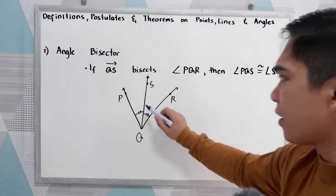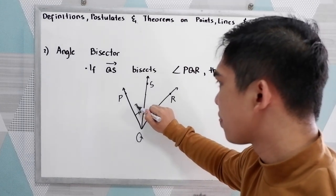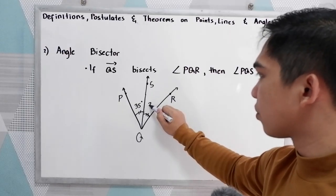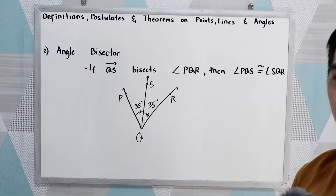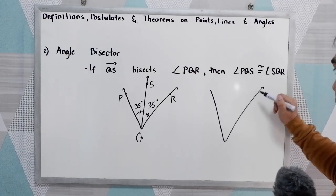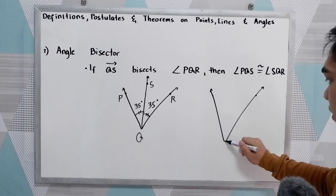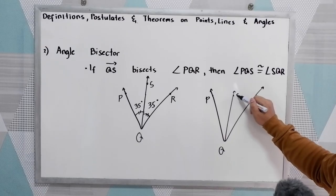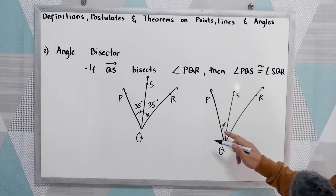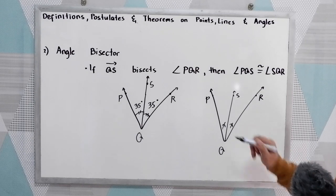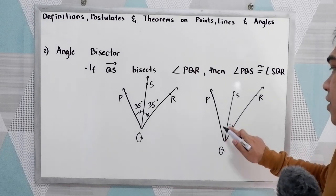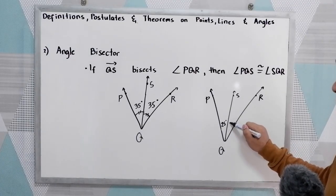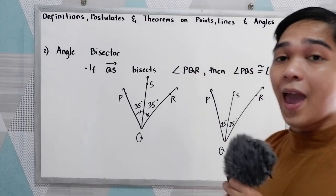So they are equal. If angle PQS measures 35 degrees, then angle SQR is also 35 degrees. Similarly, if the angle measures X, the other angle also measures X. If in your given it is 25 degrees, this angle is also 25 degrees. So that is the angle bisector.